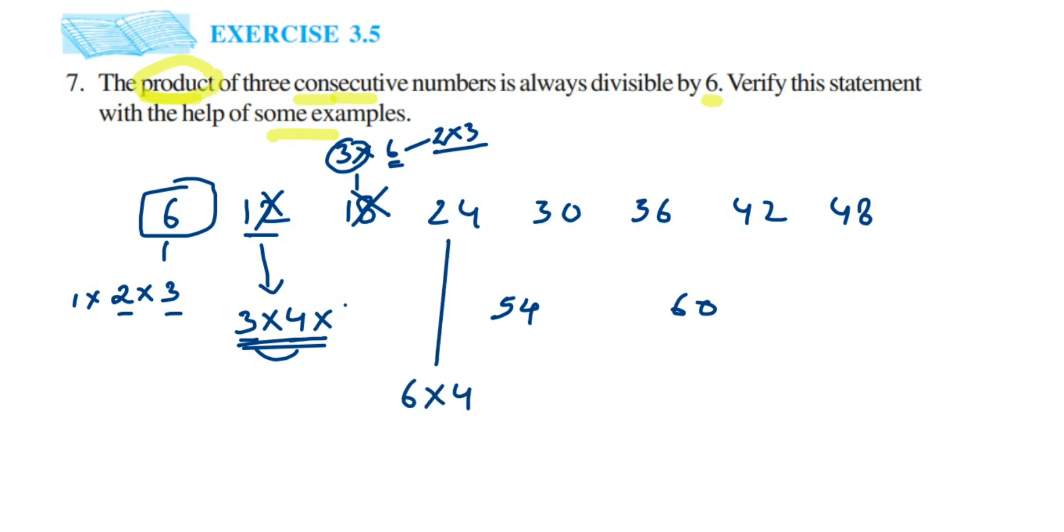And again I can split 6 as 2 into 3. So I can split 4 also as 2 into 2, but I want the required answer. I'm searching for 3 consecutive. So if I split 6 here, I'm getting 2 times 3 equals 6. So 2, 3, 4 are three consecutive numbers. So 24 is the answer.